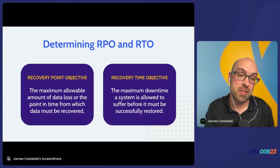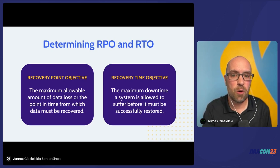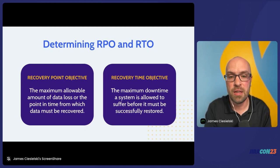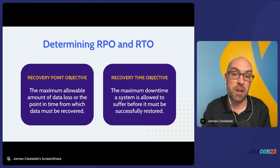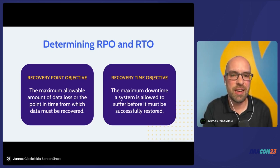RTO stands for Recovery Time Objective — this is the maximum downtime a system is allowed to suffer before it must successfully be restored. If your RTO was 48 hours, then you could actually lose two days' worth of data: the 23 hours and 59 minutes that was not backed up because the disaster took place just before the backup process kicked off, plus the 24 hours of data that never made it into the data set because of the extra 24 hours of downtime courtesy of the 48-hour RTO. Decisions around data protection and backups are largely informed by your RPO and RTO, and that's why they're really important to define and get right.